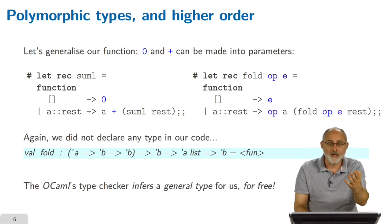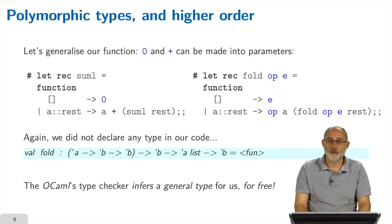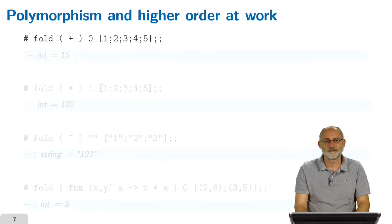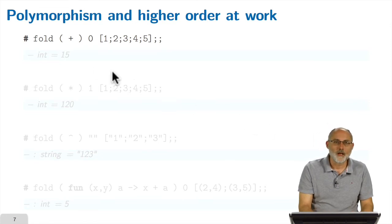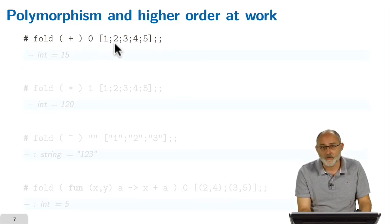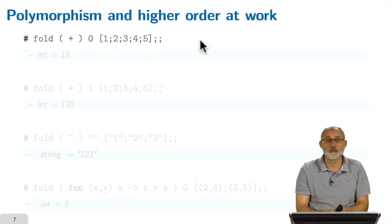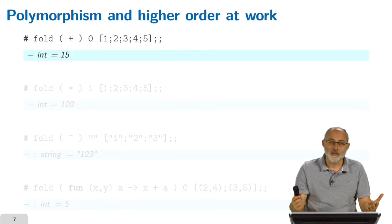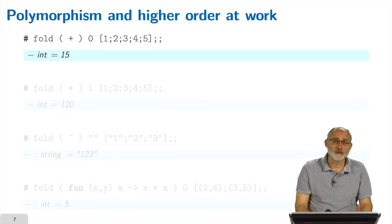And once you have a function of this general type, you can apply it to many different situations without changing the code. So let's do it. So now I'm using this fold, the operator is the sum, the value for the empty list is zero, I apply it to the list one, two, three, four, five, this unsurprisingly will compute the sum of all the elements of the list, which is, you see, one plus two plus three plus four plus five, this makes 15, and actually the system tells us, okay, the resulting list integer and value is 15.